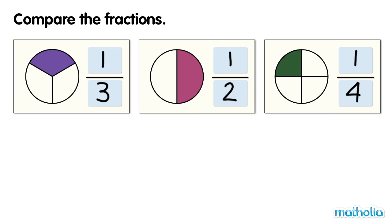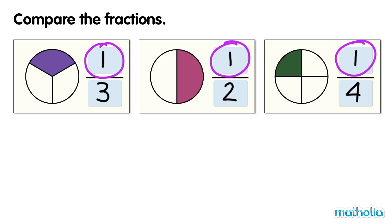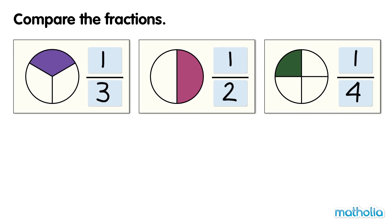The numerators of each fraction is one. These are all unit fractions. Greater denominators create smaller unit fractions, and smaller denominators create greater unit fractions.